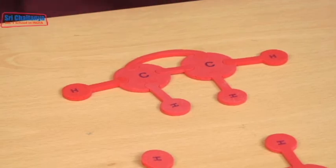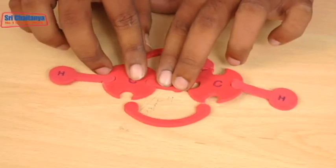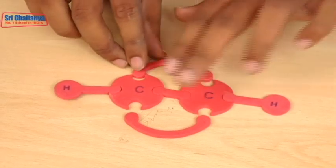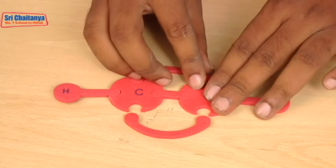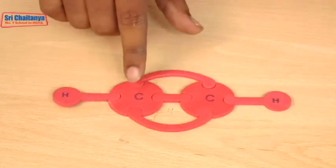One more example, C2H2. In that between carbon atoms, one sigma bond and two pi bonds are present. Each carbon atom is bonded with one hydrogen atom.